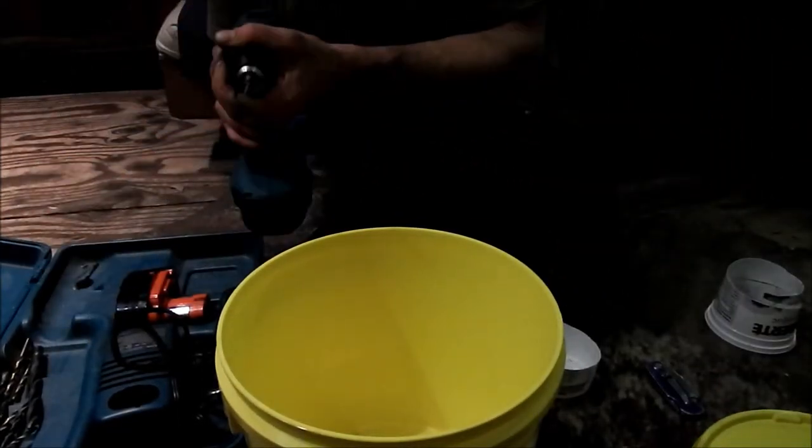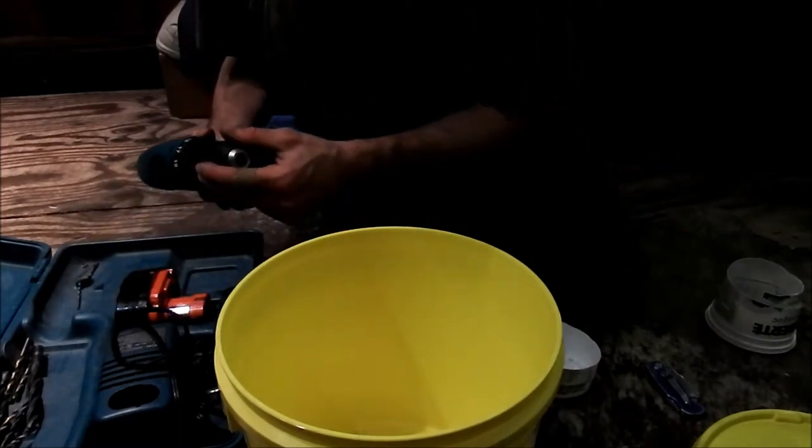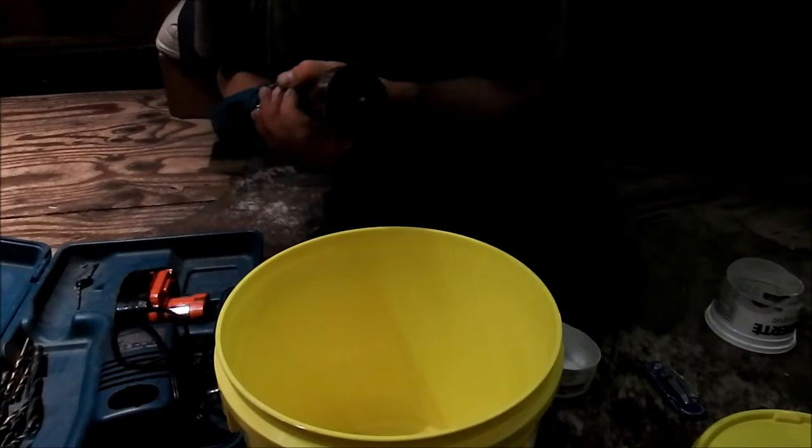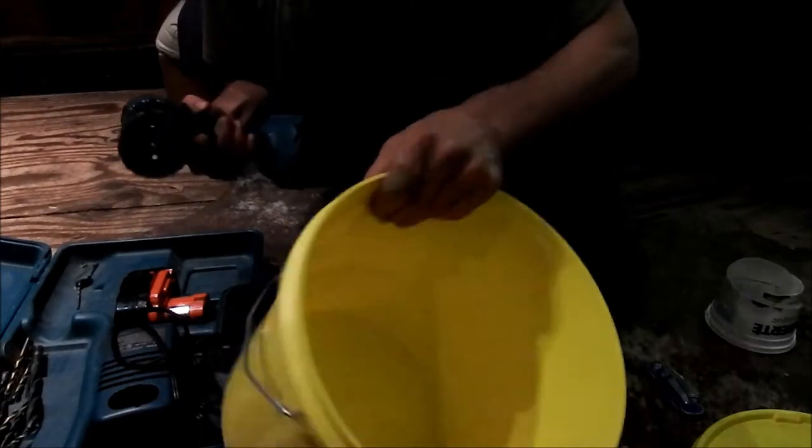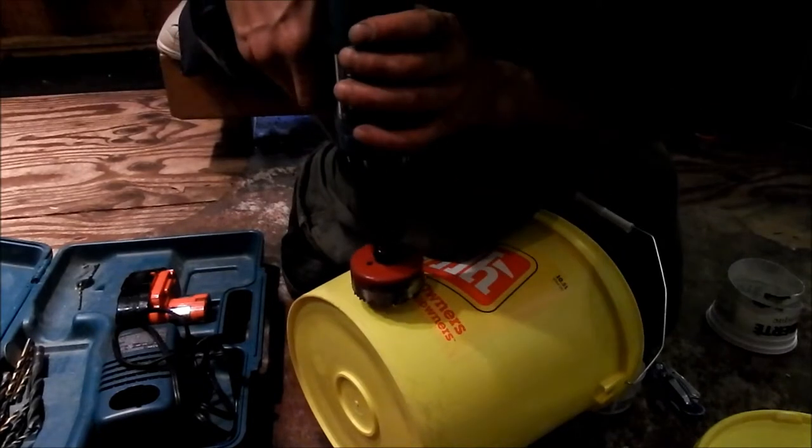And we're going to just take this. Now's the time to drill our hole for the entrance. And you want that really close to the bottom of the bucket, so the rats can get in easily, and so can mice.